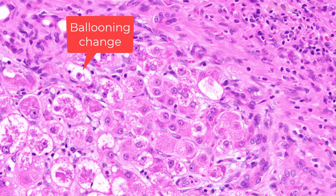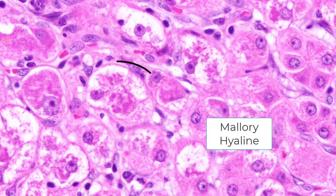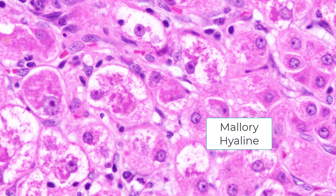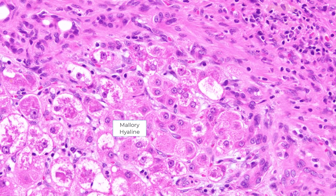Notice these enlarged clear cells — ballooning degeneration — and this thick, ropey, eosinophilic material, which is the Mallory hyaline. So the presence of Mallory hyaline does not always indicate steatohepatitis or alcoholic steatohepatitis.